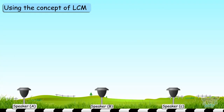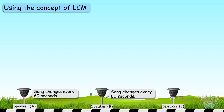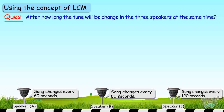Three speakers are installed one after the other at some distance. All three are turned on at the same time to play a tune. The tune changes in the first speaker every 60 seconds, in the second speaker every 80 seconds, and in the third speaker every 120 seconds. After how long will the tune change in all three speakers at the same time? We just need to find the LCM of 60, 80, and 120 to get the least common multiple of these three numbers.